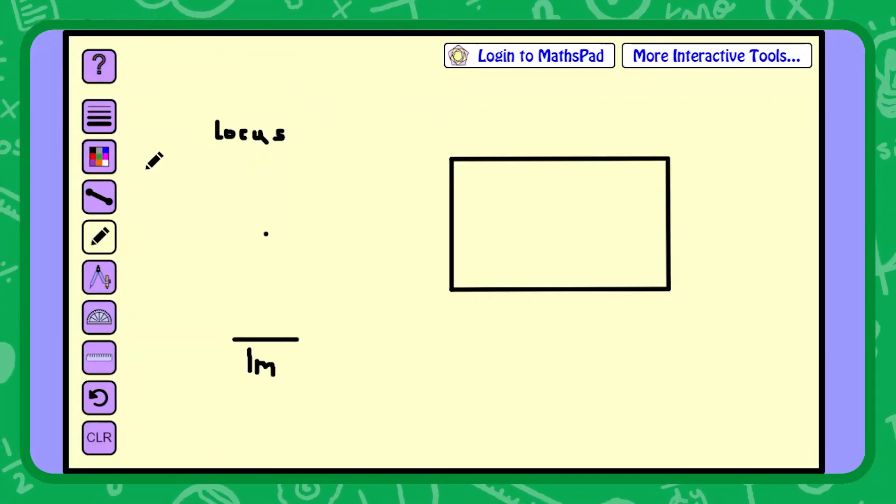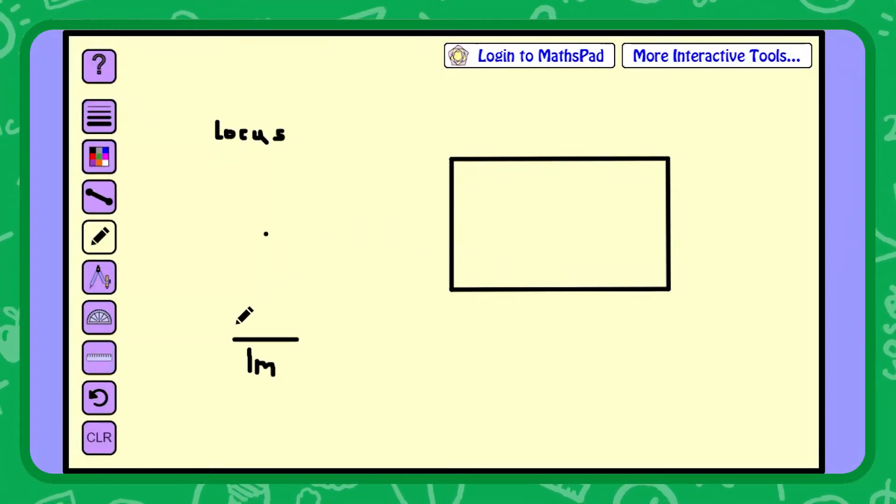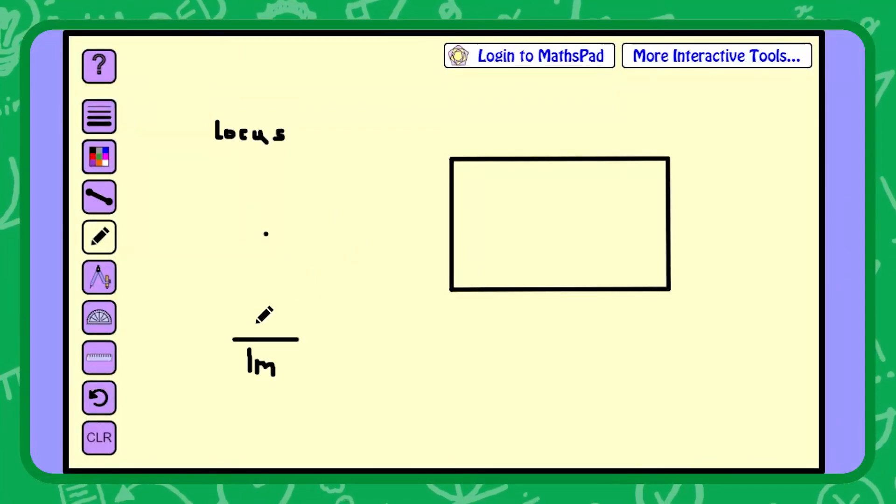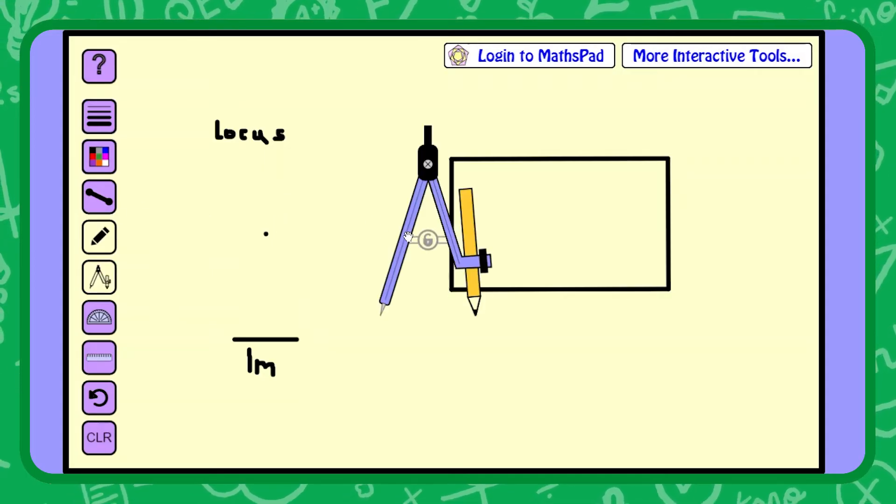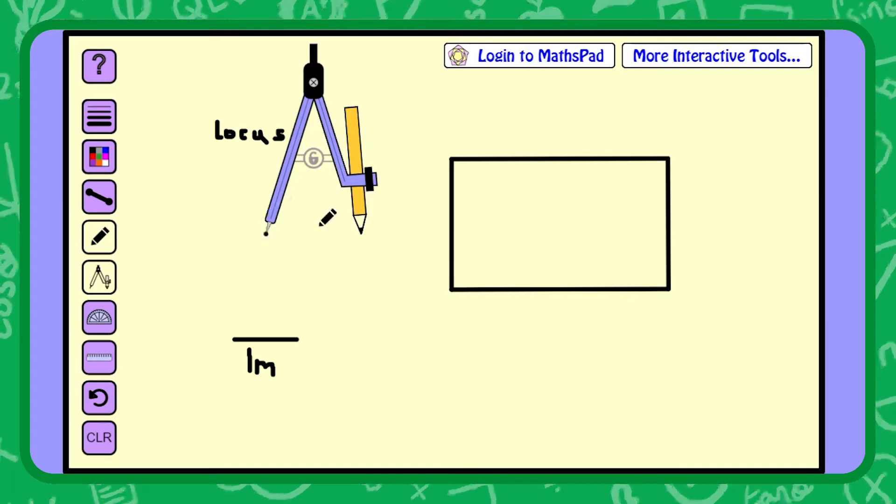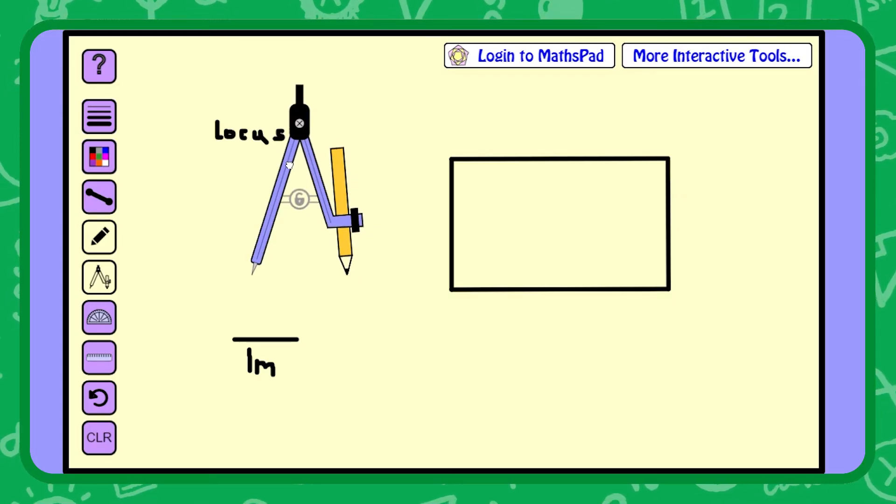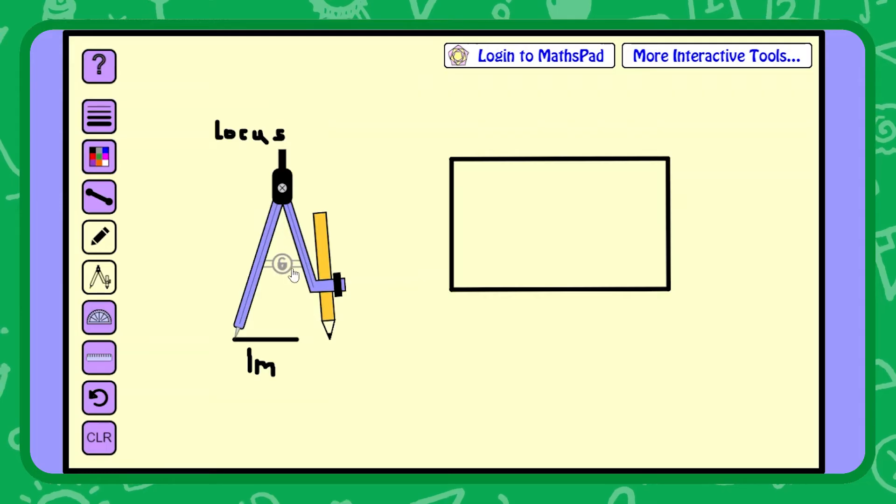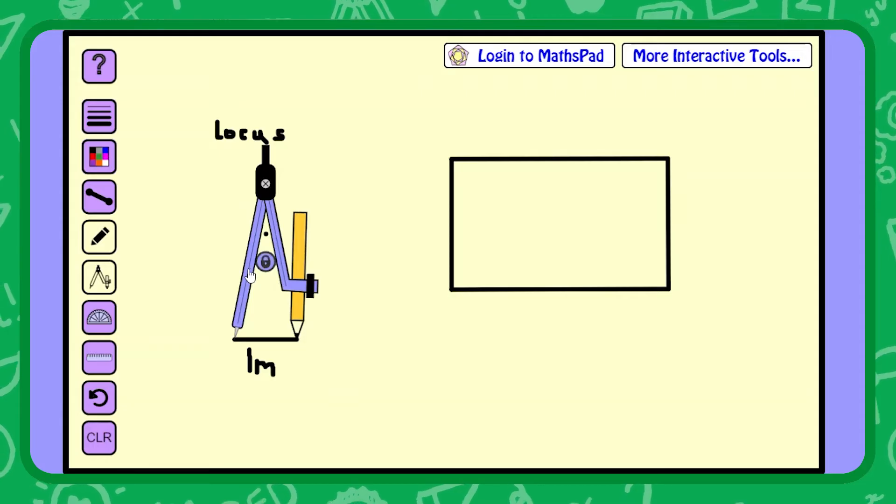Okay, first things first, you have two basic loci, or a locus is singular, loci is plural. You have two basic loci, one around a point and the other from a straight line. So if we take this scale as being one meter, I want to construct the locus of points that are all one meter away from this point. In other words, all the points that are one meter away from this central point. How do I do this? Again, you might sort of figure out that it's a compass that's needed here, because we're dealing with a circle with a radius.